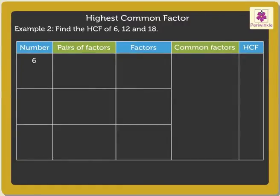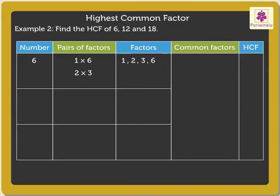The pairs of factors of number 6 are: 1 × 6 = 6, and 2 × 3 = 6. Thus the factors of 6 are 1, 2, 3, and 6.